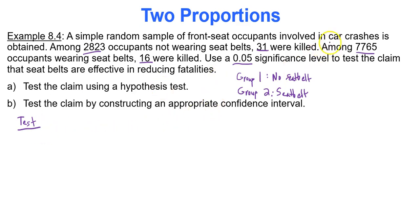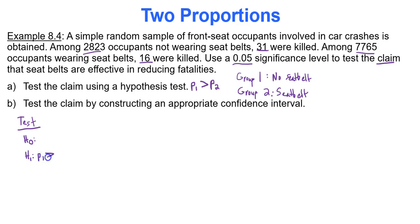The claim is that seat belts are effective in reducing fatalities. If true, the proportion of deaths among non-wearers would be greater than among wearers, which goes with the alternative hypothesis using 'greater than.' The null is always equal to. Write group one on the left to avoid data entry errors. The claim is the alternative hypothesis. In Google Sheets: x1 = 31, n1 = 2,823, x2 = 16, n2 = 7,765, and the alternative sign is greater than.